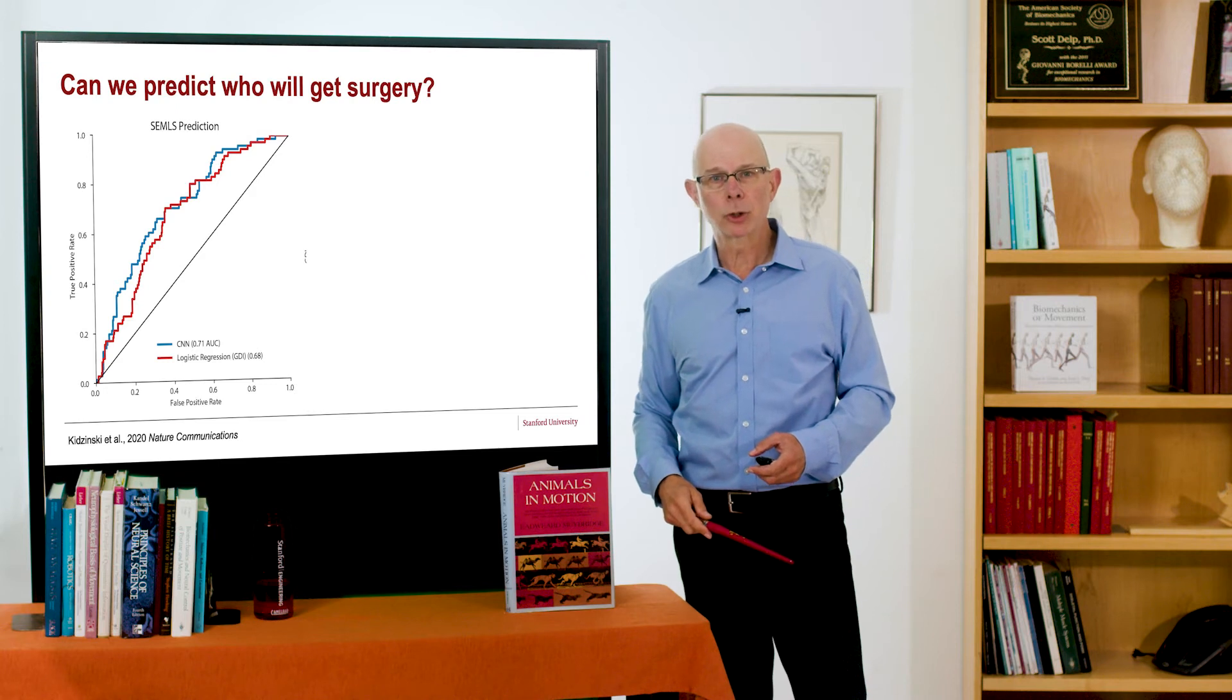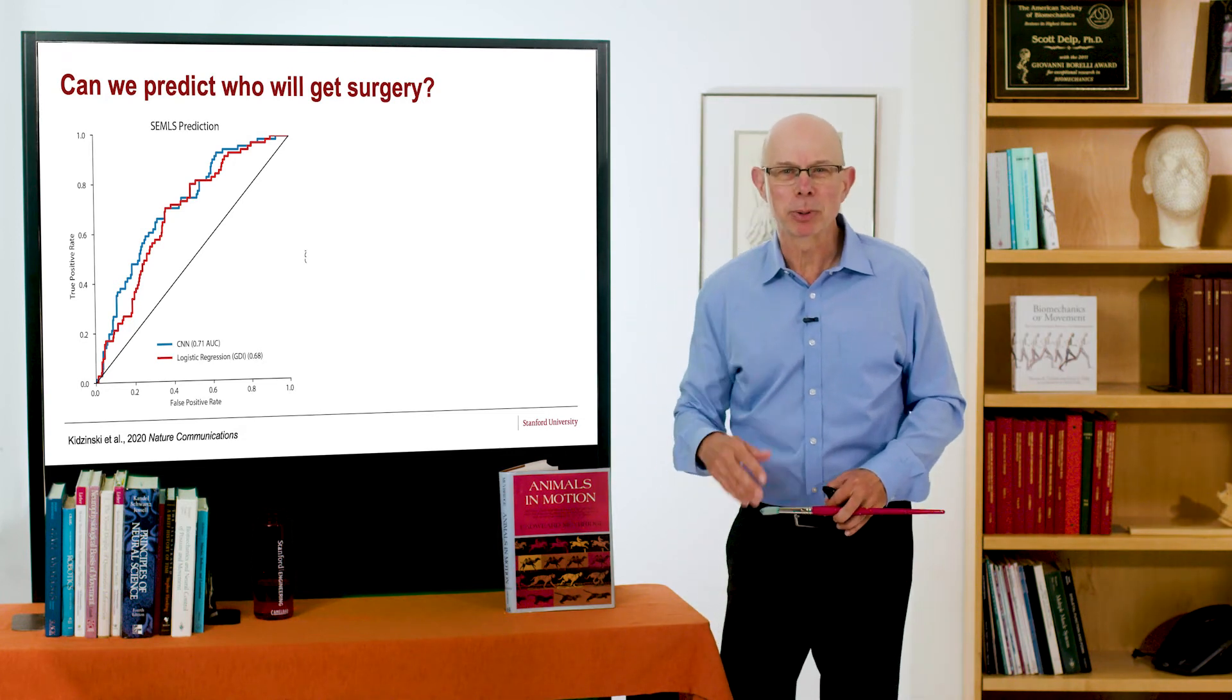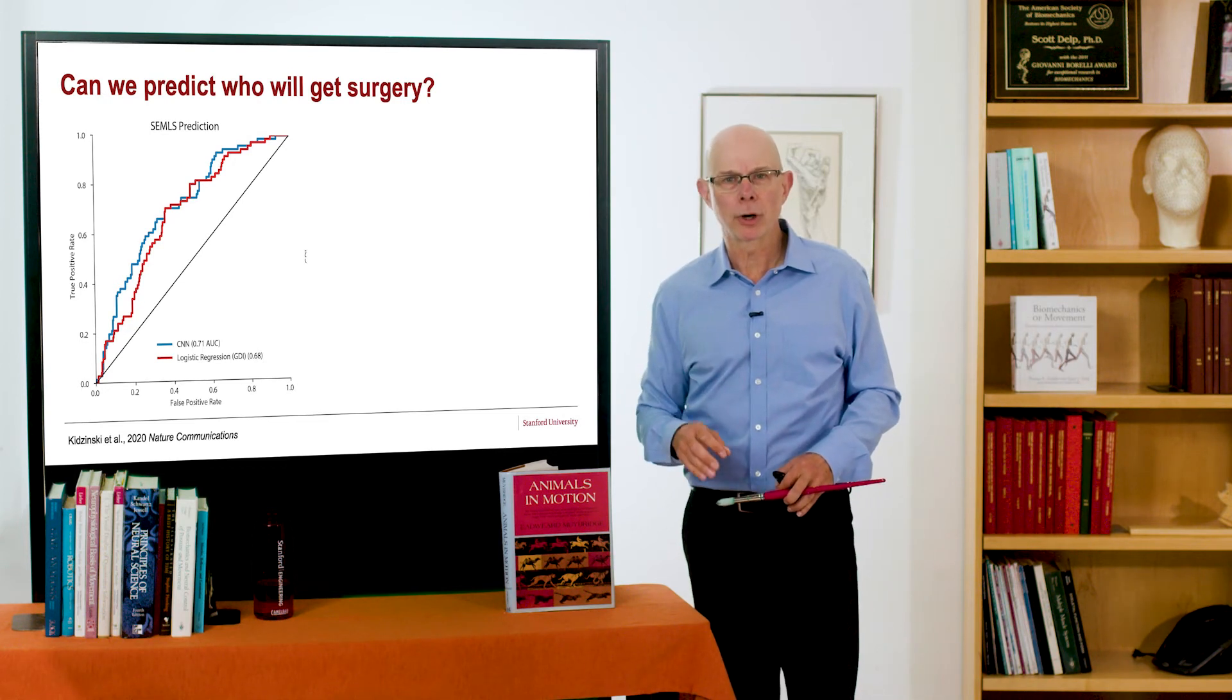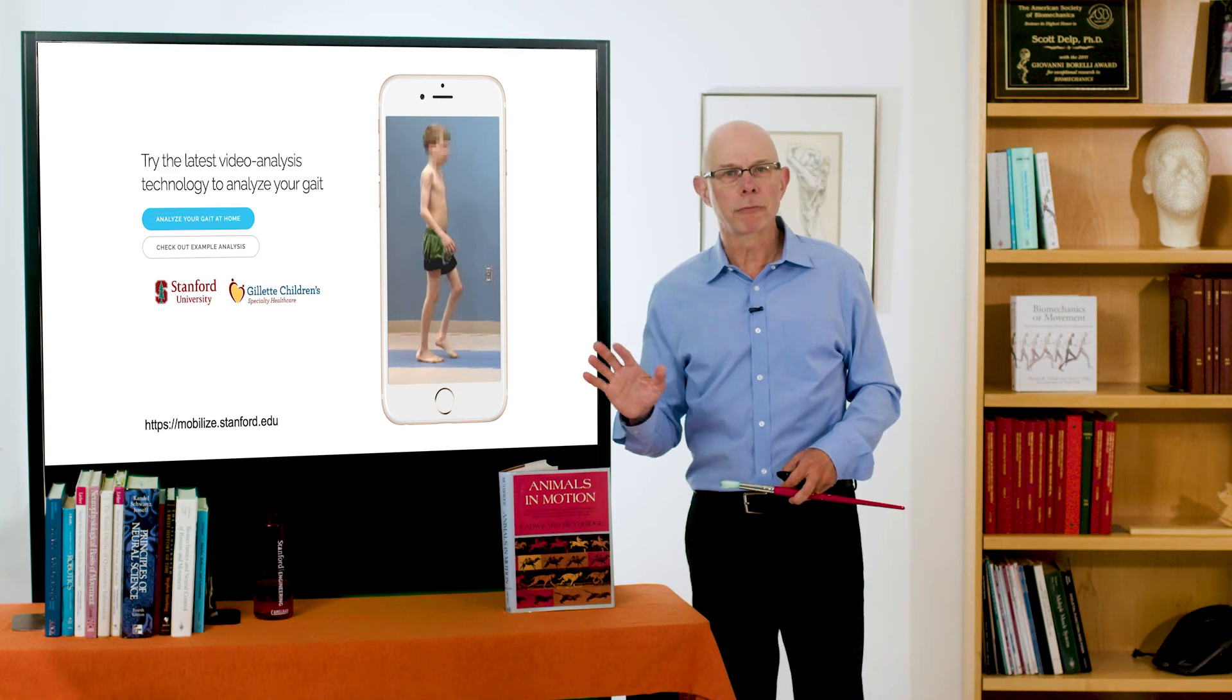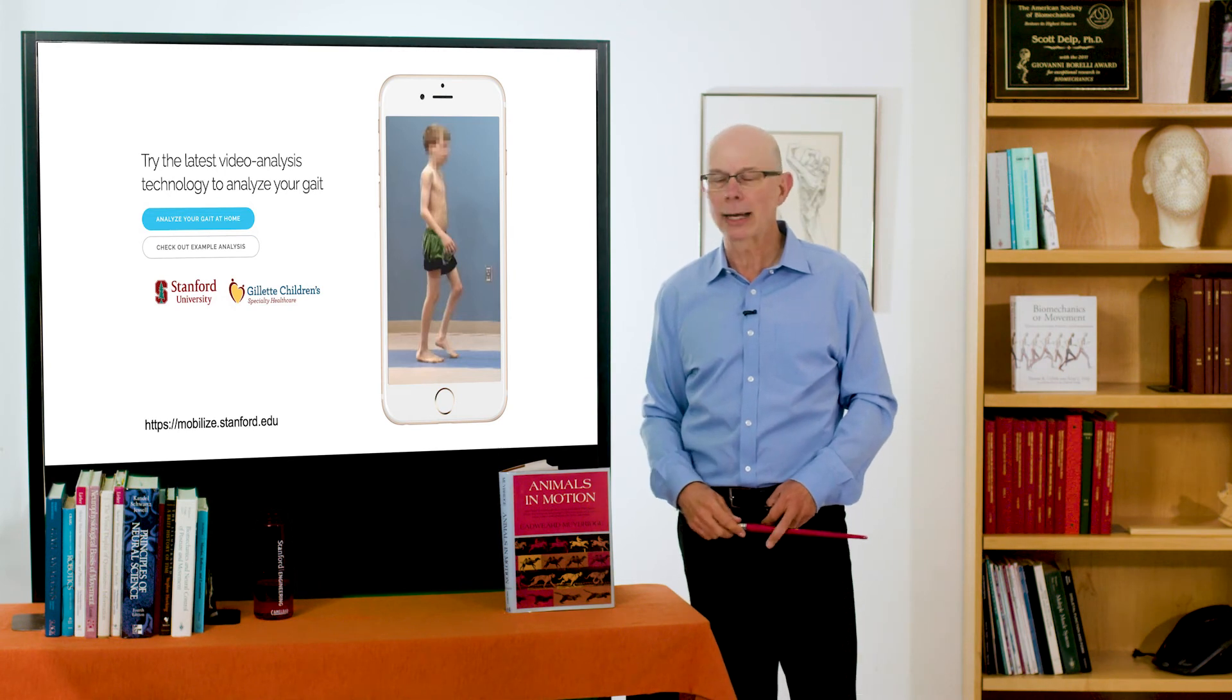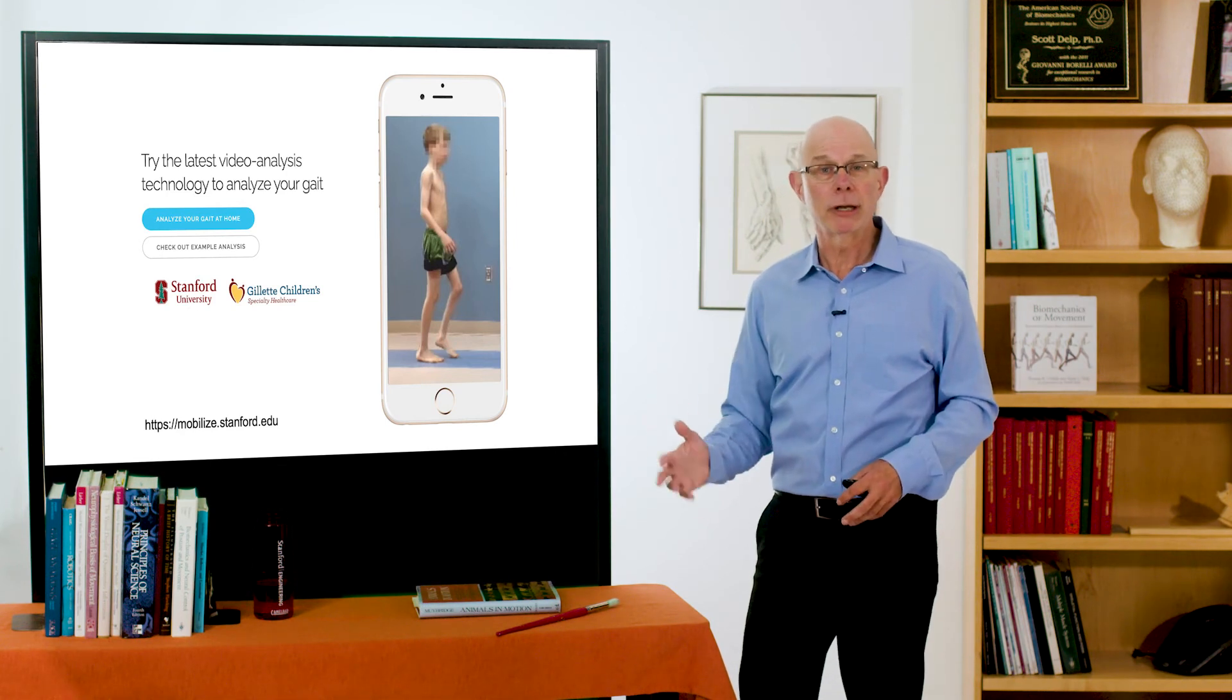Can we predict who's going to get surgery? Now, I don't think we're at the point in time where we would plan surgery with a smartphone, but it could be a nice screening tool with our convolutional neural network. It matched or even slightly outperformed a model of GDI from the gait deviation index from optical motion capture with an area under the curve of 0.71, suggesting its potential utility as a screening tool. We have made all of these tools freely available. You can give it a try. You can upload a video of your gait. You can see what your gait deviation index is. We're also interested in having people use this in their own research for different clinical populations.